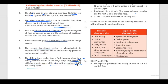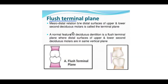In that sentence there are a few terminologies we need to know. First is flush terminal plane — what is flush terminal plane? It is a normal feature of deciduous dentition where the distal surfaces of upper and lower second deciduous molars are in the same vertical plane.